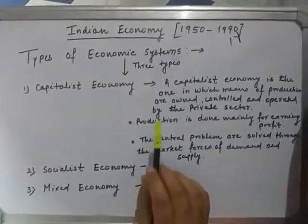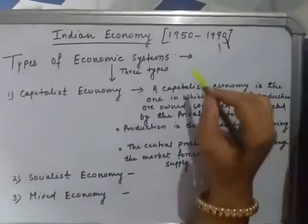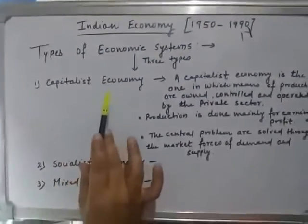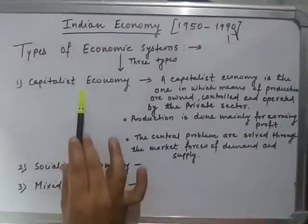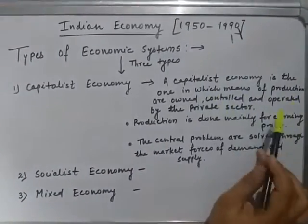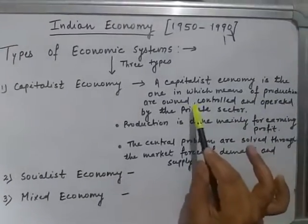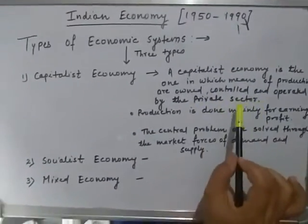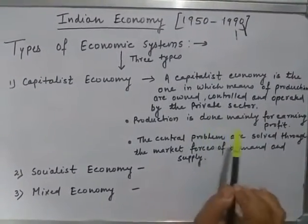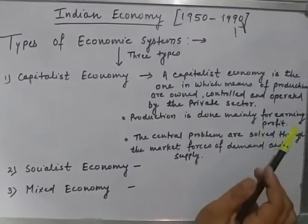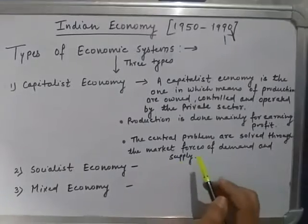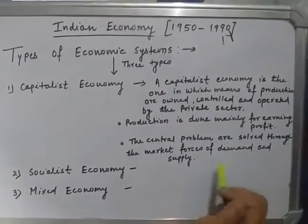Now, types of economic system. There are three types of economic system. The first is the capitalist economy. A capitalist economy is one in which the means of production are owned, controlled, and operated by the private sector. The main motive of production is to earn profit, and the central problems are solved through the market forces of demand and supply.